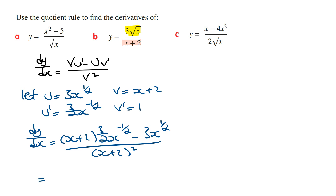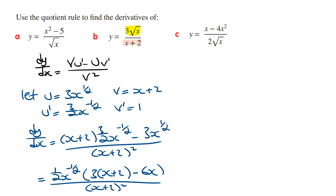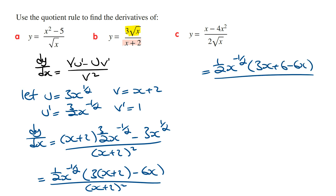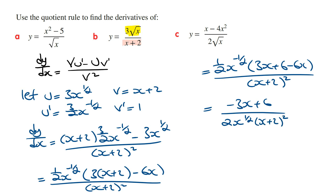From the numerator, we can take out a half times x to the power of minus a half as a common factor. So this is going to be a half times x to the power of minus a half times 3 times x plus 2, and the second term becomes minus 6x, all over x plus 2 squared. Expanding the brackets gives 3x plus 6 minus 6x, which is minus 3x plus 6, all over 2 times x to the power of a half times x plus 2 squared. Taking out minus 3, the final answer is minus 3 times x minus 2 over 2 times the square root of x times x plus 2 all squared.